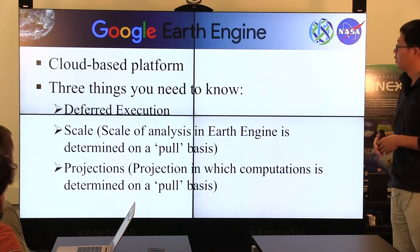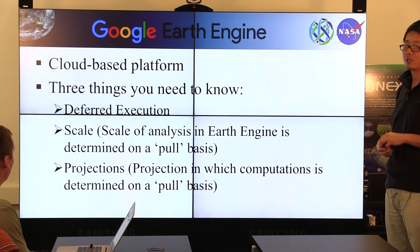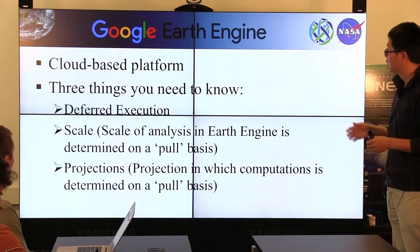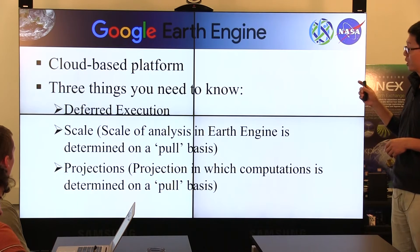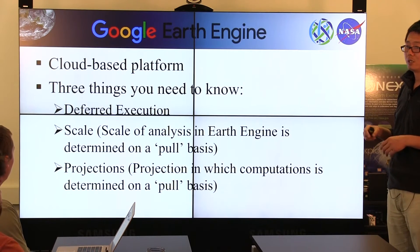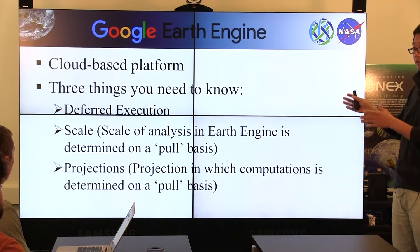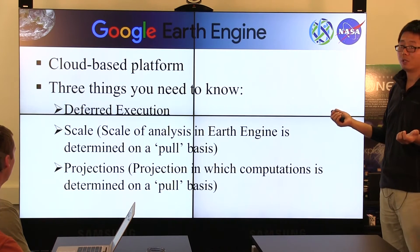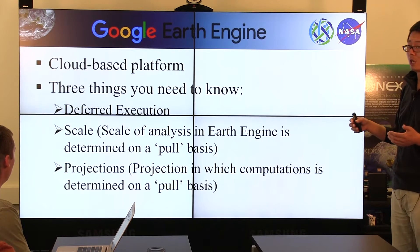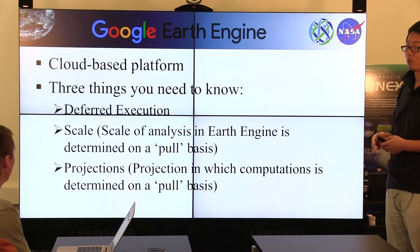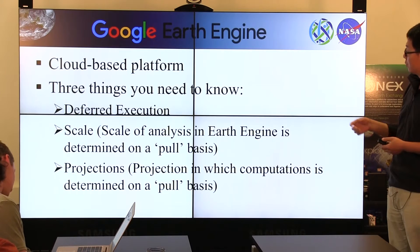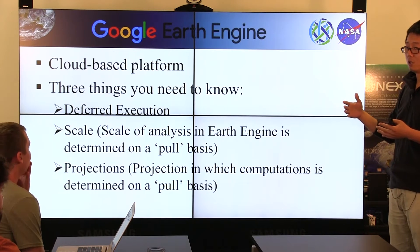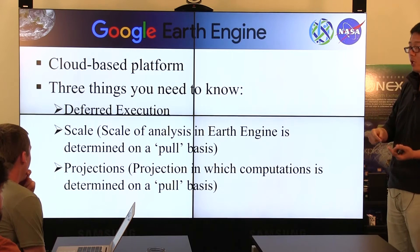For Google Earth Engine, we need to know three important things for conducting geospatial analysis on this platform. The first is deferred execution. You must always keep in mind that there is a client side and a server side. Google Earth Engine provides two client-side interfaces: Python and JavaScript. Usually we use JavaScript so we can use our web browser to quickly write code. With deferred execution, all analysis will not be conducted immediately — it will be transferred to the server side.